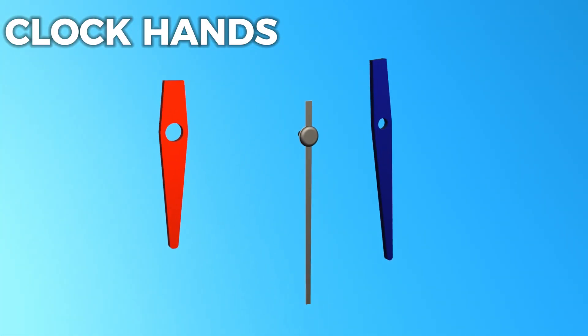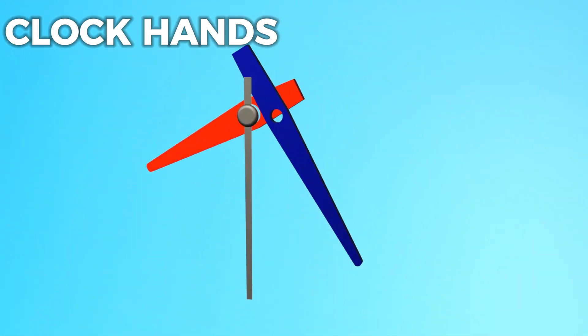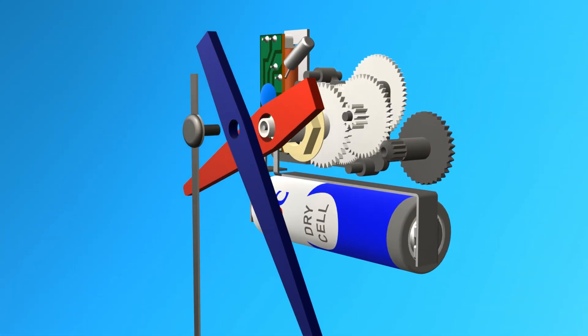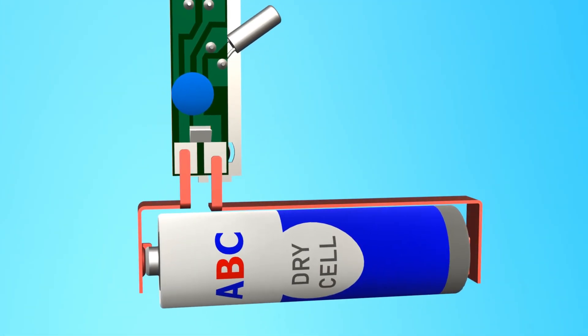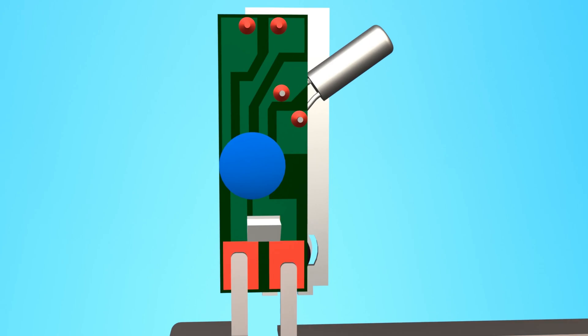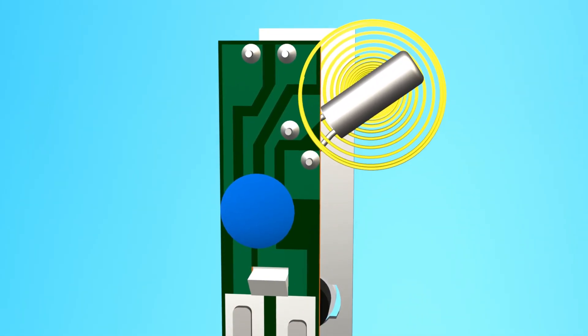Clock hands: The hands are the visible part of the clock mechanism, displaying the time. They are attached to the gear system and move accordingly as the gears turn. When you insert a battery into a clock, it sends an electric current through the quartz crystal. This current causes the crystal to vibrate at a consistent frequency.